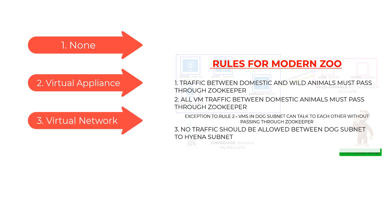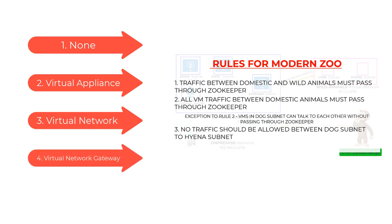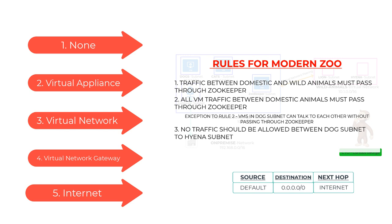The third next hop type is virtual network, which means it takes the default Azure routing. We would use this for the exception to rule two: traffic inside the dog subnet, where two VMs should just take the default Azure routes and not traverse through the zookeeper. The fourth option is virtual network gateway, specified when you want traffic to go through the virtual network gateway. The last one is internet, specified when you want traffic to take the Microsoft backbone or the internet route. By default when you create a virtual network, Azure creates a 0.0.0.0/0 route to the internet. This quad-zero is a special route, meaning anything which does not match any other rule follows this rule — sort of like a catch-all.